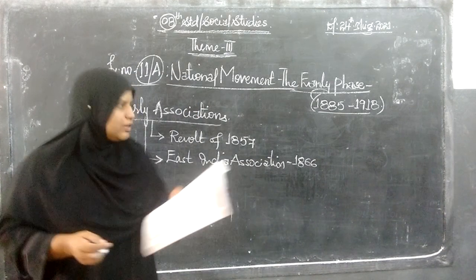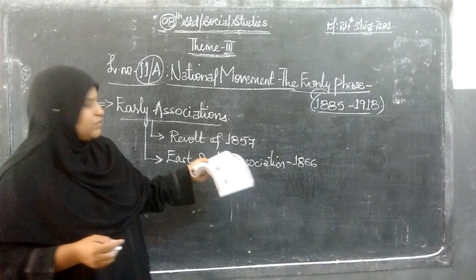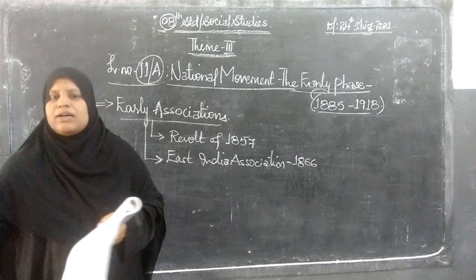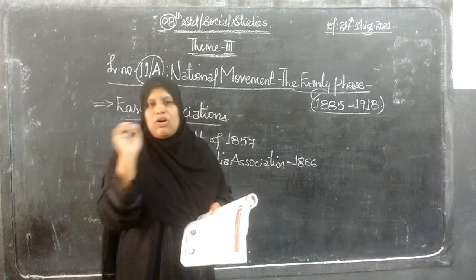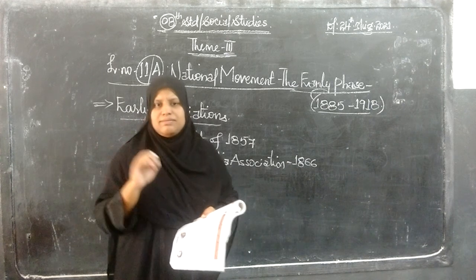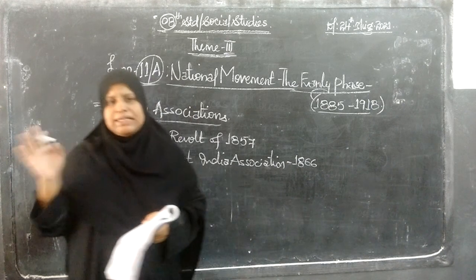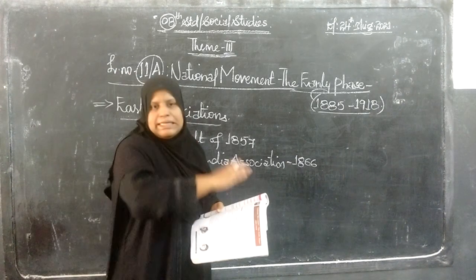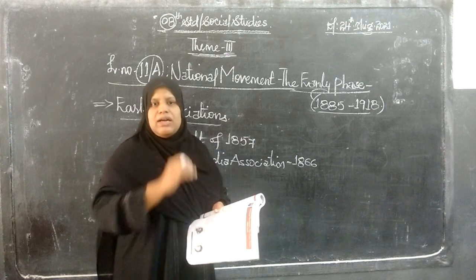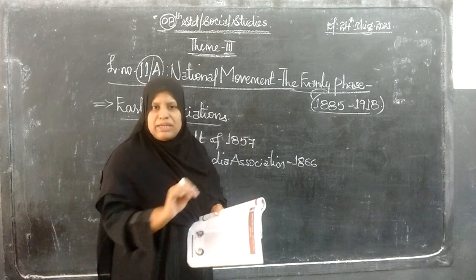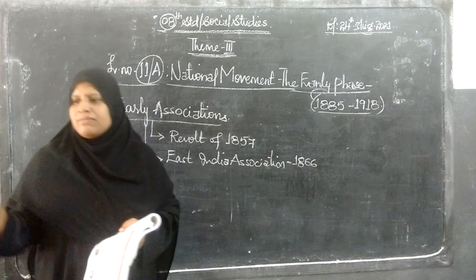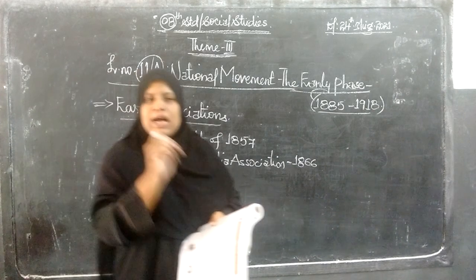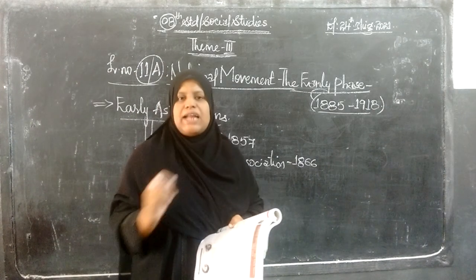So likewise, the Revolt of 1857 — which we learned about in Class 7 as the Mutiny or Indian Soldiers' Revolt — was essentially related to the soldiers. In that movement, all the peasants, farmers, artisans, and craftspersons also participated.